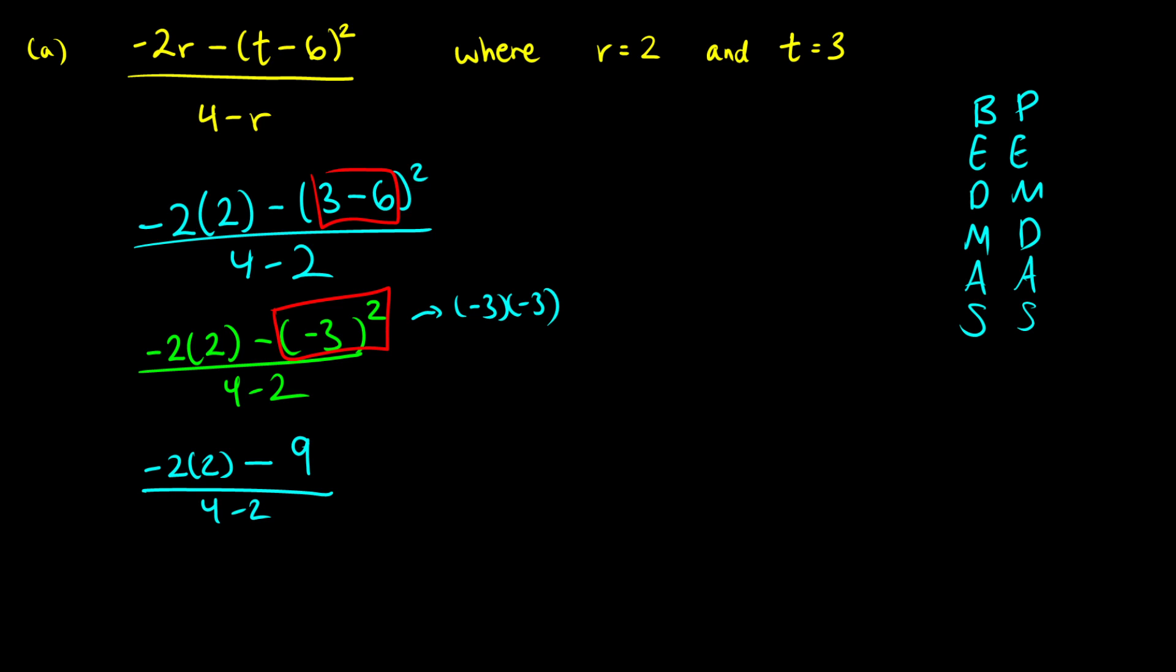Our next step is to do division and multiplication in the order that they appear. So in this case, we have multiplication of negative 2 times 2. So we'll do this here. So negative 2 times 2 gives us negative 4. Then we'll subtract 9 and do 4 minus 2.